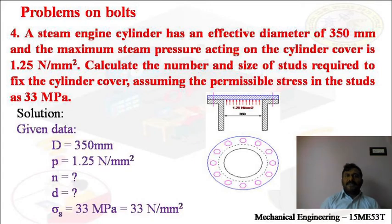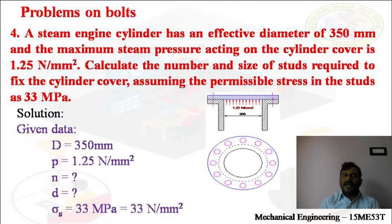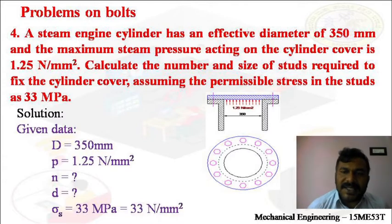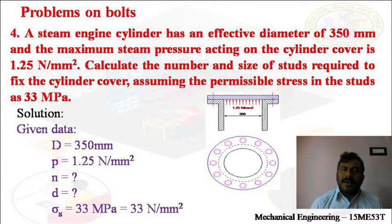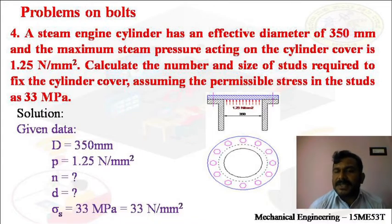This is the problem. A steam engine cylinder has an effective diameter of 350 mm and the maximum steam pressure acting on the cylinder cover is 1.25 Newton per mm square. We have to calculate the number and size of studs required to fix the cylinder cover, assuming the permissible stress in the studs as 33 MPa.